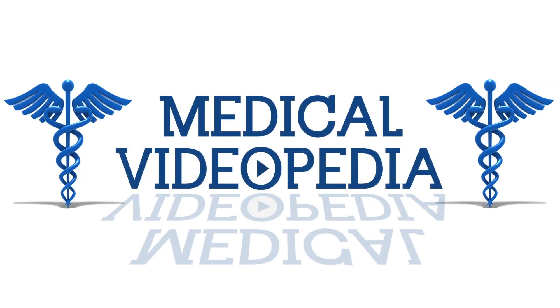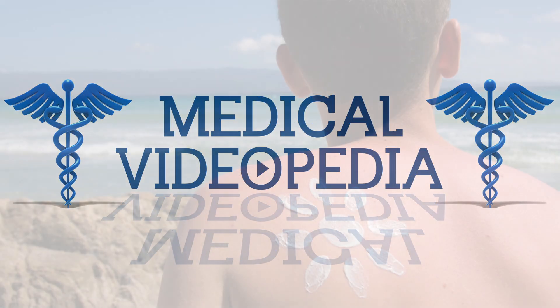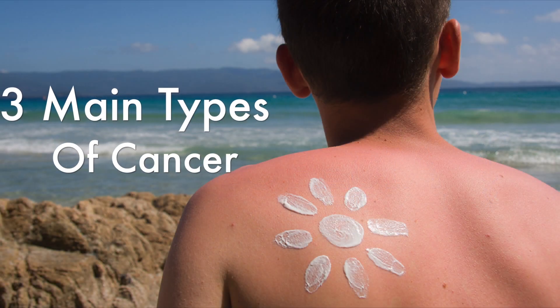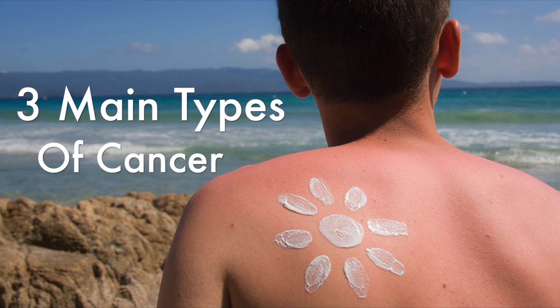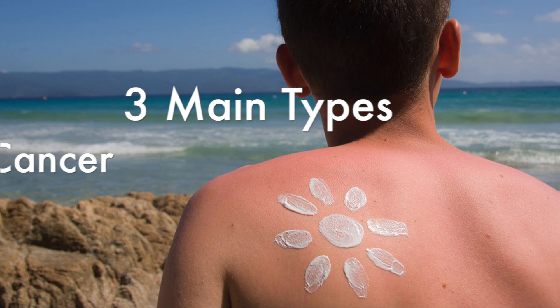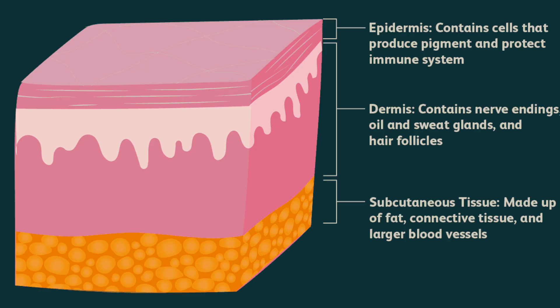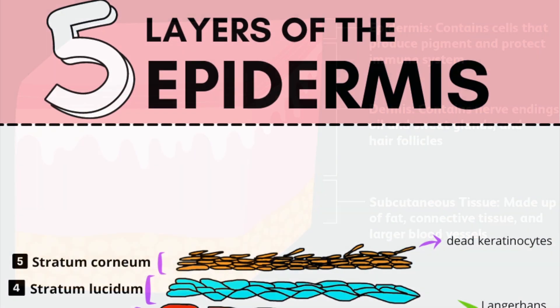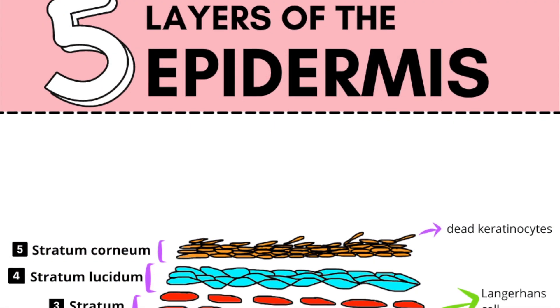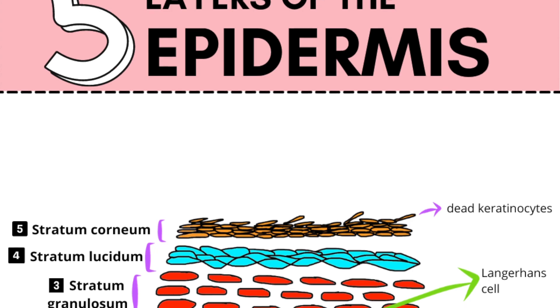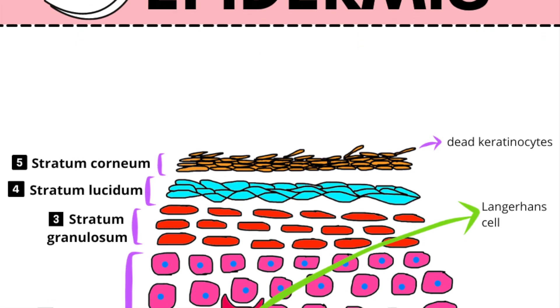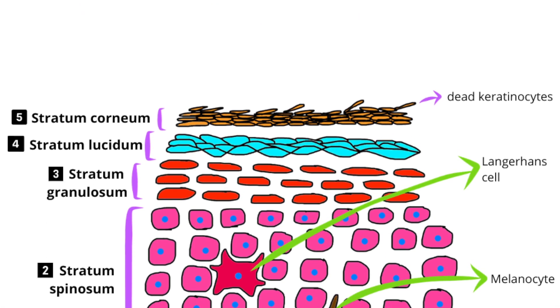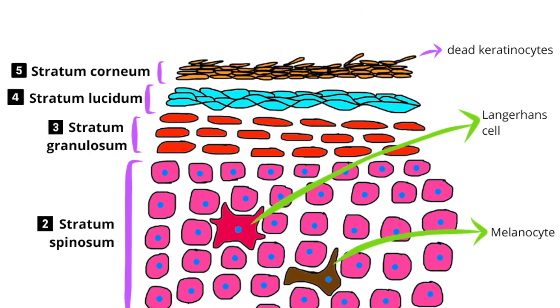Welcome back to Medical Videopedia. Today we will be discussing the three major types of skin cancer. Most skin cancers begin in the epidermis, your skin's top layer. The epidermis is the thinnest layer of skin but is responsible for protecting you from the outside world, and is composed of five layers of its own.